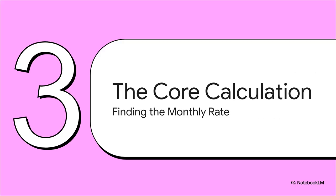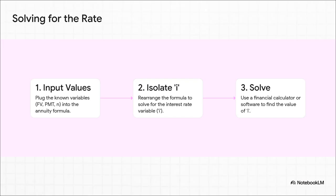With all our variables laid out nice and neat, it's time for the main event. We are going to use that powerful future value formula to solve for our one unknown, I, that monthly interest rate. So here's the game plan. First, we plug all of our known values into the formula. Now, the tricky part is actually solving for I. Because it's mixed up in both a fraction and an exponent, you can't really isolate it with basic algebra. That's why, in the real world, we let technology do the heavy lifting with a financial calculator or a spreadsheet.